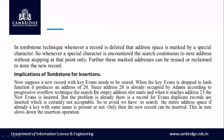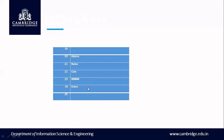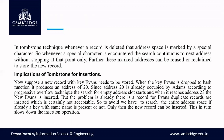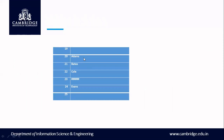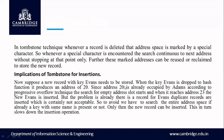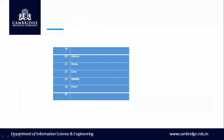Now suppose a new record with key evans needs to be stored. When the key evans is dropped to the hash function, it produces an address of 20. But address 20 is already occupied by adams. According to progressive overflow, the search for an empty address slot starts from 20. When it reaches address 23, it finds that 23 is a free space — since dean was deleted. So the new key evans will be stored at address 23.